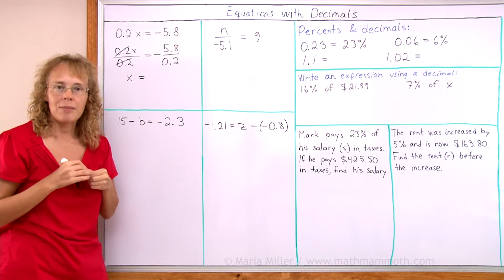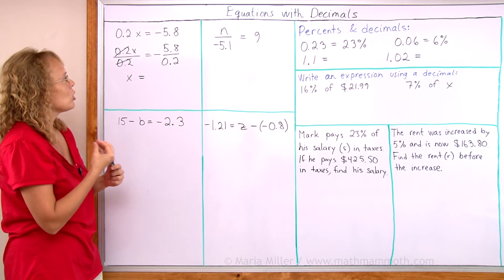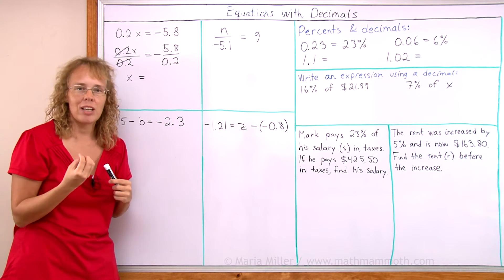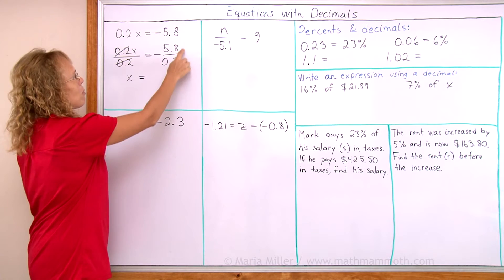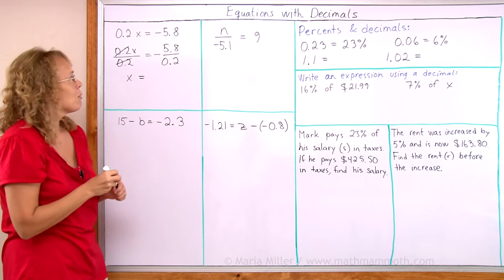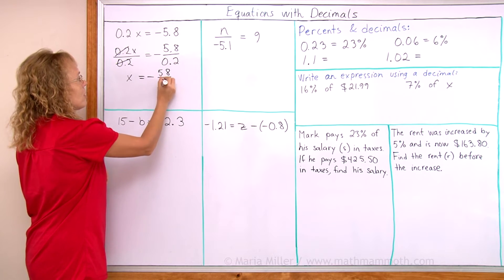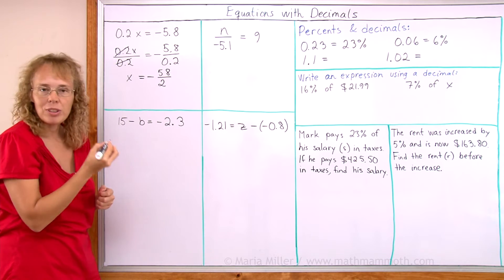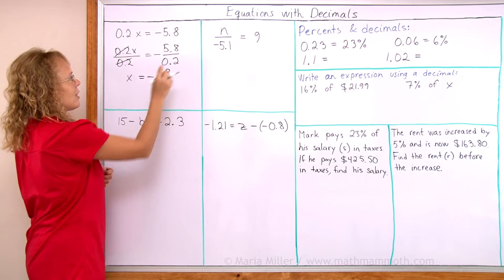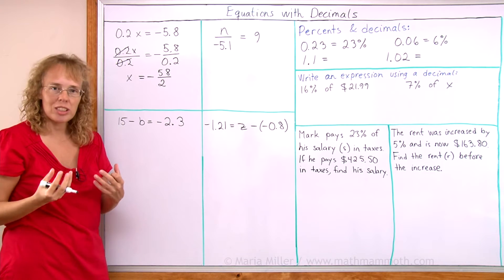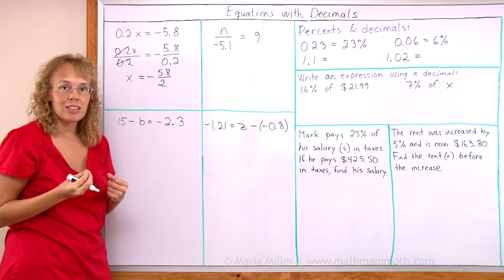We can do this mentally but the principle we need to use is that we need a whole number divisor. So we multiply both of these by 10, we change the problem into 58 over 2. 5.8 times 10 and this times 10 because that's how decimal division is done when your divisor is a decimal number.